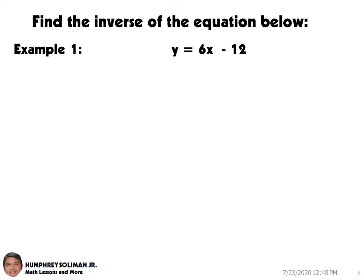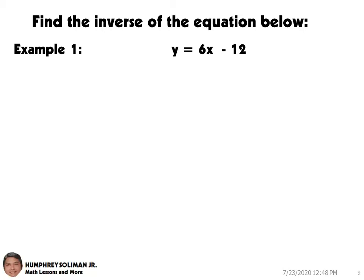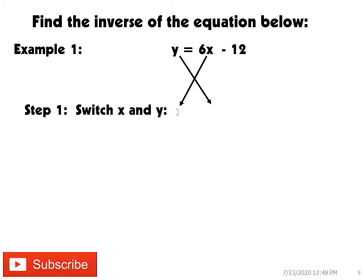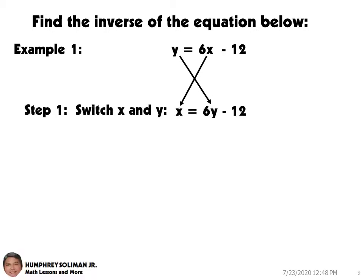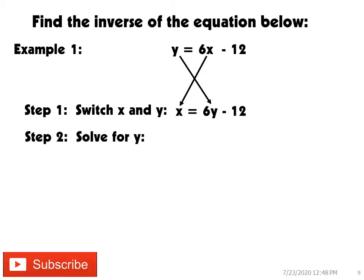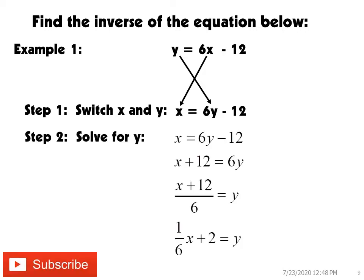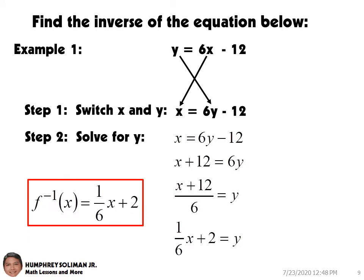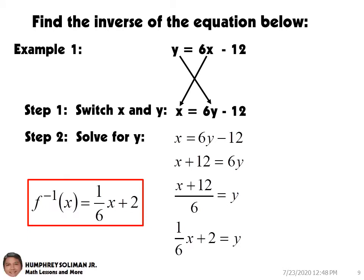We have example number 1. We need to find the inverse of the equation below. Step 1, we need to switch the places of the x and y variables. Step 2, we solve for y. This will give us the inverse function: f⁻¹(x) equals x over 6 plus 2.